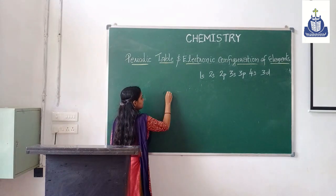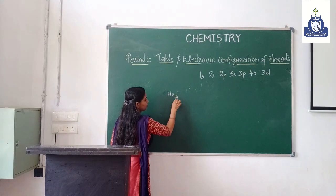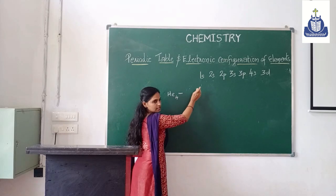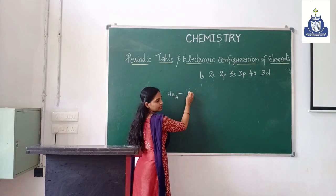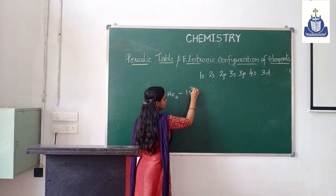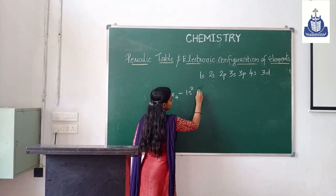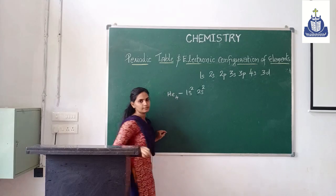Another example: beryllium, atomic number 4, with 4 electrons. The first 2 electrons fill the 1s subshell. The other 2 electrons go into the 2s subshell. So the electronic configuration is 1s² 2s².